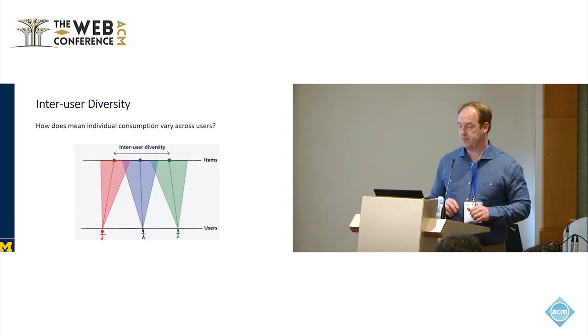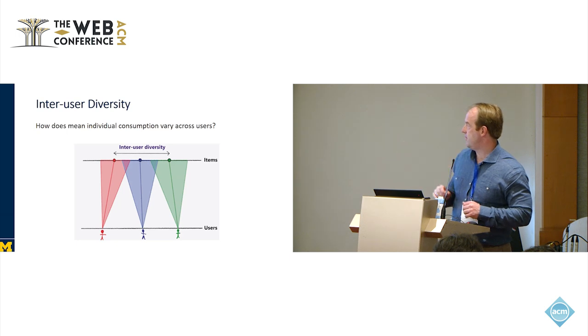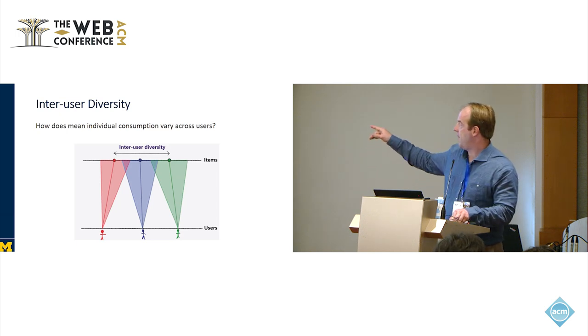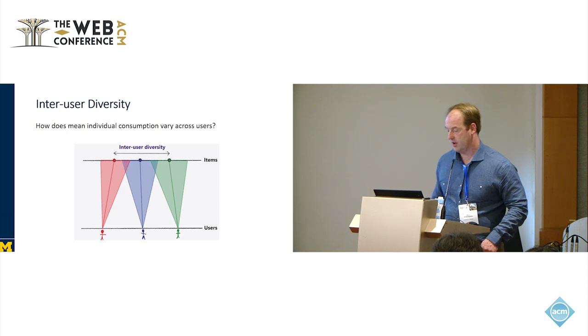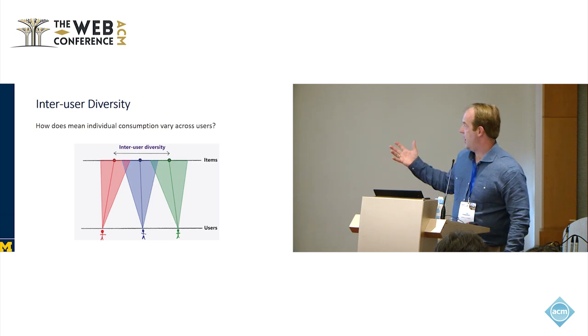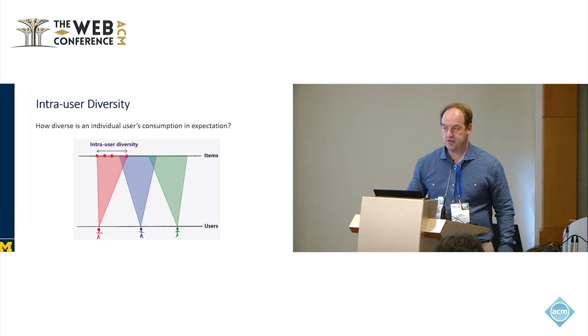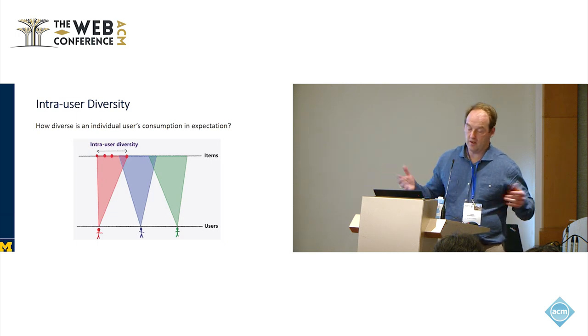The first definition is inter-user diversity. You take the mean consumption of each agent and look at how much this varies. The users are on a real number line, their preferences are on the real number line, and the items are on a real number line. We can look at how far apart the different averages are. You can think of this as a variance of the means. Intra-user diversity looks at one agent at a time and asks how different are the items that agent is consuming. Then we average across the agents, so this is an expectation of the variance.